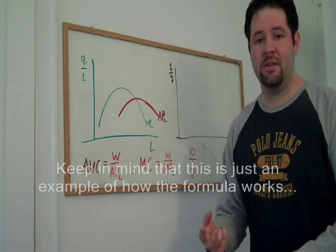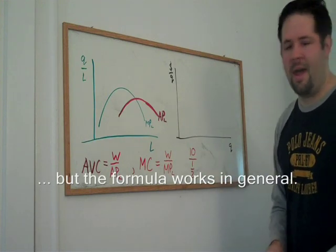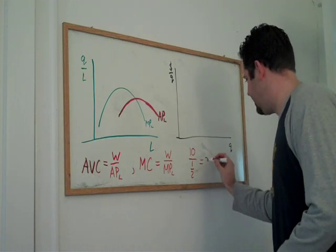Two workers, ten dollars an hour—it's got to be twenty dollars. Well, ten divided by one half gives us the right answer.